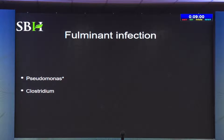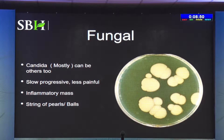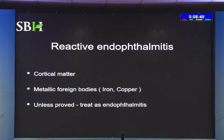Other organisms causing fulminant infections are Pseudomonas and Clostridium. For fungal infection, the most common is Candida, but fungal infections are usually slowly progressive with quiet eyes presenting over many days after injury. Sometimes you may see inflammatory masses like cotton balls in the vitreous cavity.